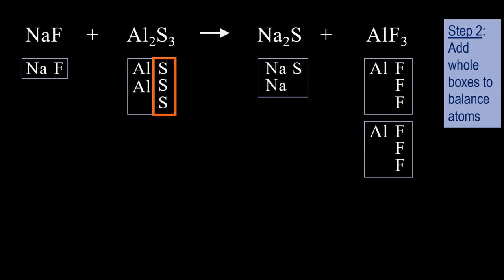For sulfur, there are 3 on the left, but only 1 on the right. What are we going to do? That's right, add 2 more boxes of Na2S to balance the sulfurs.